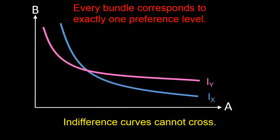and this is the pink curve that's labelled Iy. This indifference curve has a preference level of y, where y is different from x. Now let's consider their intersection point, which I've just highlighted in white.